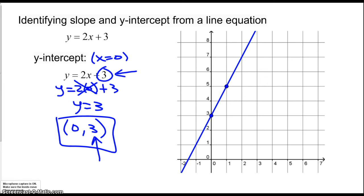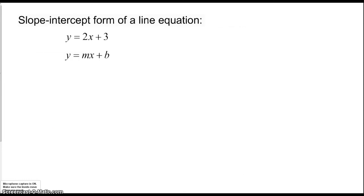Let me summarize those findings as a general rule. Whenever you have an equation of the form y equals some number times x plus another number, the number multiplying x is the slope, and the constant is the y-intercept. We usually write this as y equals mx plus b, where m is the slope and b is the y-intercept. Writing an equation in this form is called slope-intercept form, because you can read the slope and intercept directly from the equation.